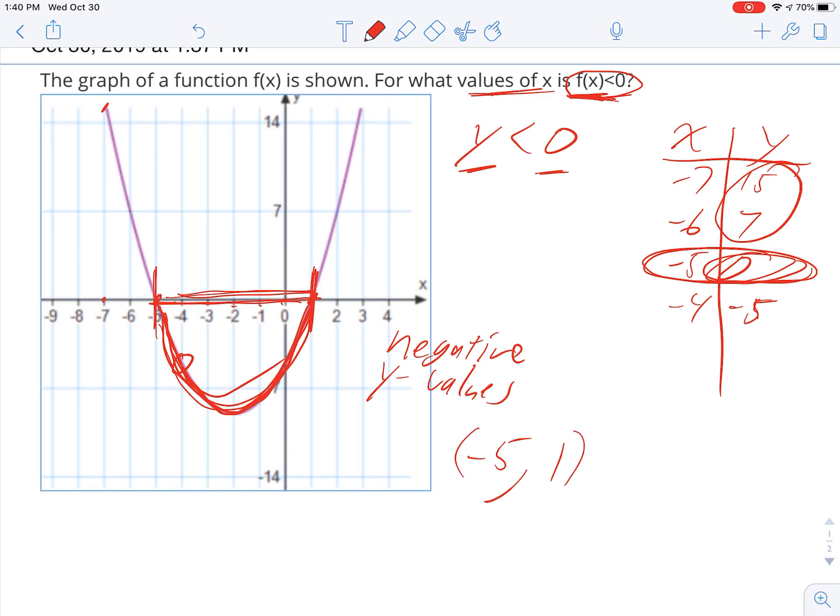We're going to put parens around it because we're not including negative 5 because negative 5 didn't give us a number that was less than 0, it gave us a y value that was 0. And this problem asked for ones that were less than 0.